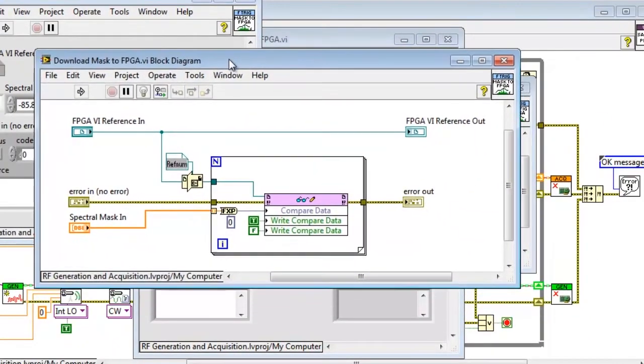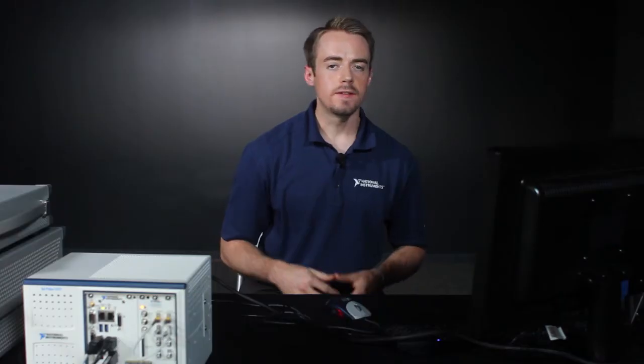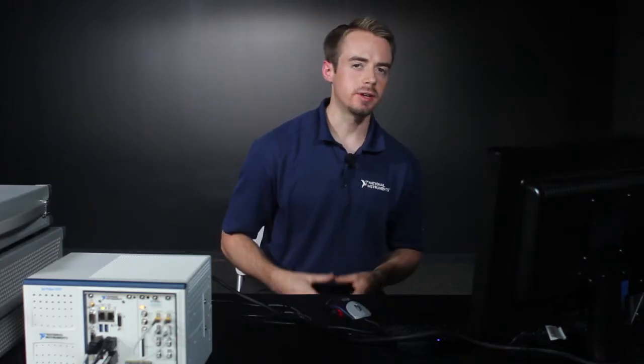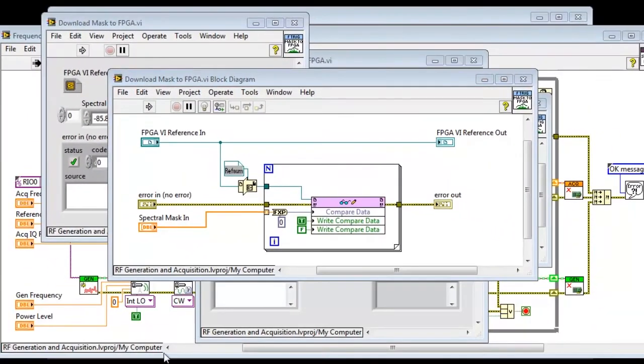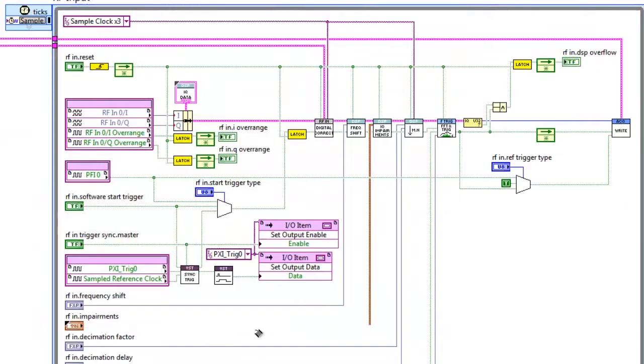Now on a traditional instrument, as you dig down into the source code, eventually you'll hit some type of wall, either a DLL or an instrument call, which allows no modification and is vendor defined. With the vector signal transceiver, the driver is completely open for the user to modify it as they see fit. So here we've seen that we've drilled all the way down into the LabVIEW FPGA IO node where we're actually writing the spectral mask to FPGA memory called compare data that we've allocated.